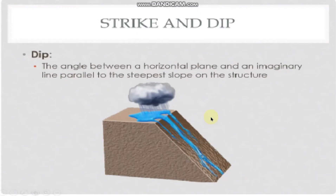Imagine that water running down the same top of the surface, or at least the top of your layers — whichever direction the water is going to run, that's the dip. The angle between a horizontal plane and an imaginary line parallel to the steepest zone on the structure.